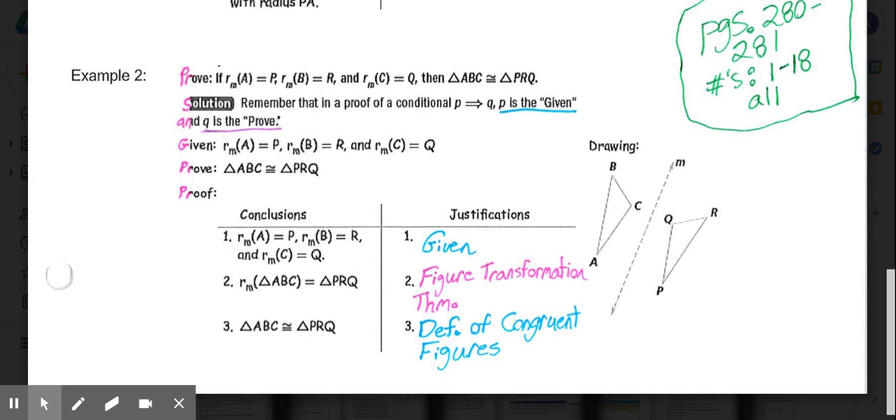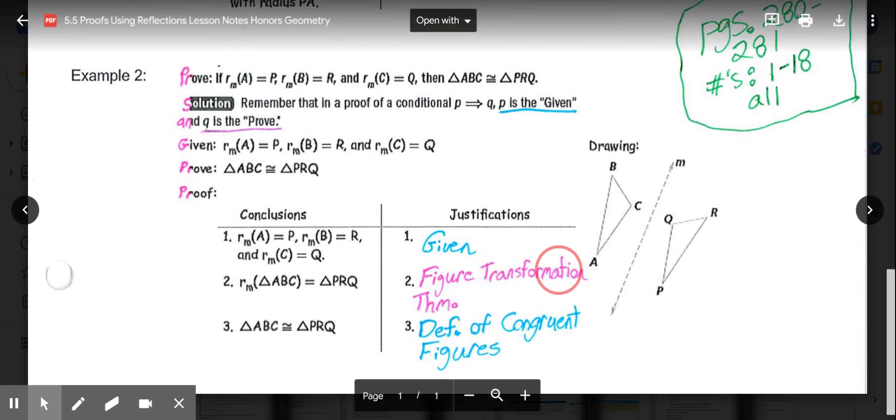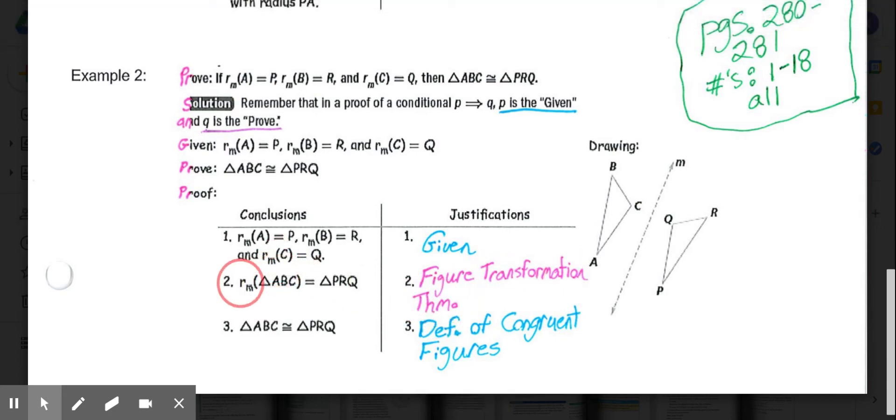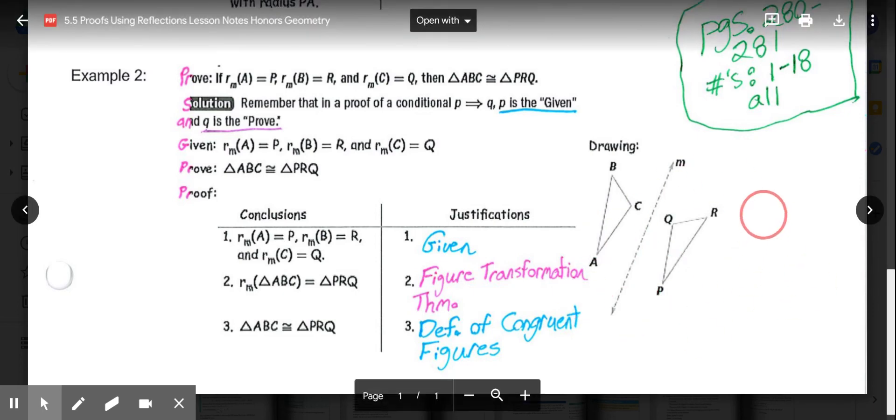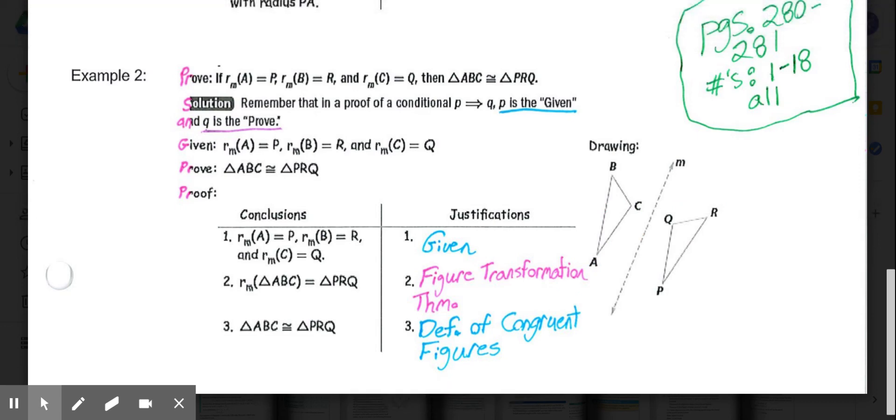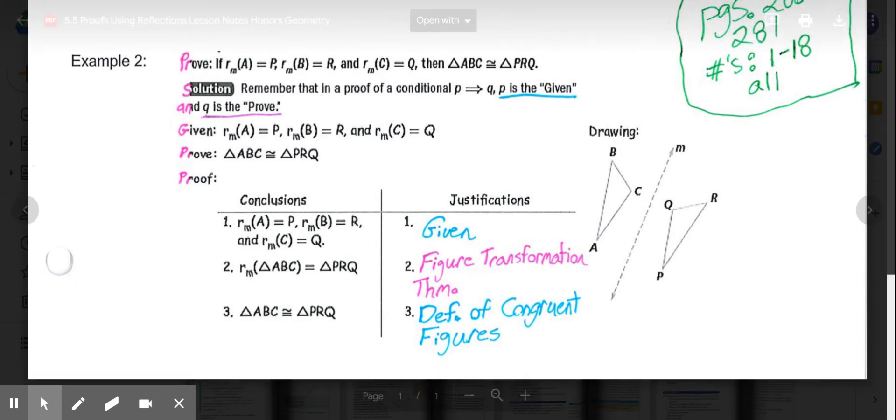Then we get to step two, where it says triangle ABC reflected over M gives us triangle PRQ. In this theorem, we use quite a bit, but we haven't defined it separately yet. But what that theorem is known as is the figure transformation theorem, saying that a reflection is a type of transformation. So if ABC is reflected over line M, that would result in triangle PRQ, the figure transformation theorem. So I'd recommend maybe making note down here somewhere where you have some space what the figure transformation theorem states. And again, you can find that in your book.